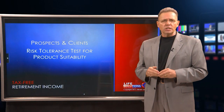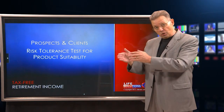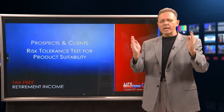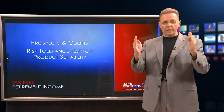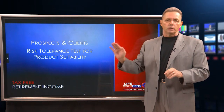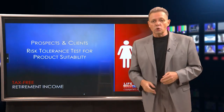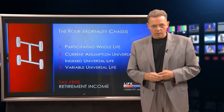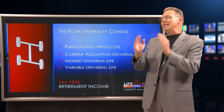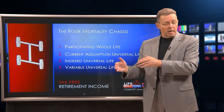I wrote a program for Innsmark called Life Compare. It compares par whole life, universal life, indexed and variable universal life, all in one chassis. When I look at that illustration from Innsmark, I'm looking at where the client fits in suitability. If a client is very conservative, doesn't want any risk, and doesn't want to lose any money, I can't use any universal life product at all. I might have to use par whole life depending upon the client's propensity for risk. The four major chassis are: participating whole life, current assumption universal life, index universal life, and variable universal life. Depending upon their propensity for risk is how I'm going to choose the chassis.